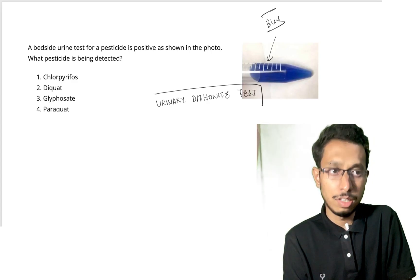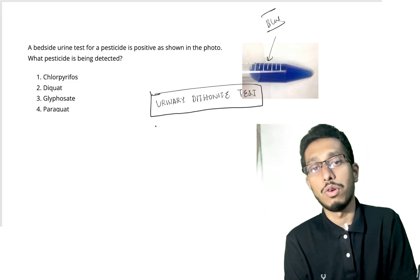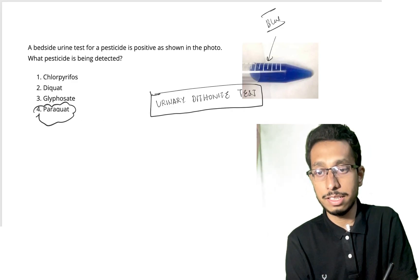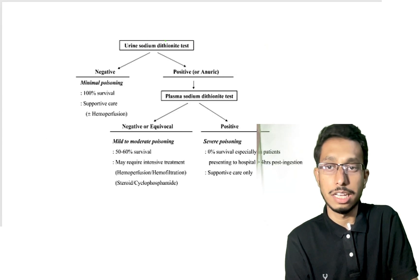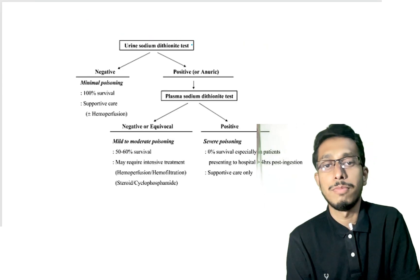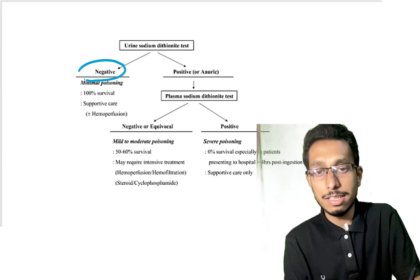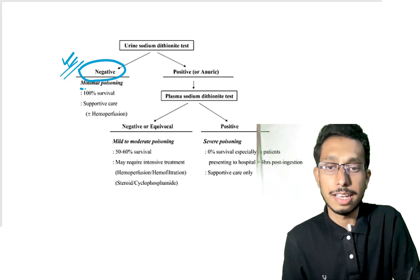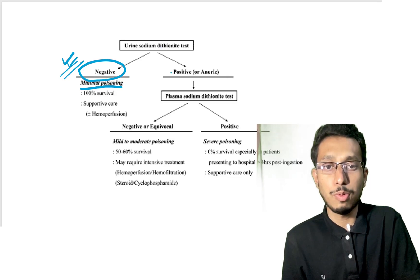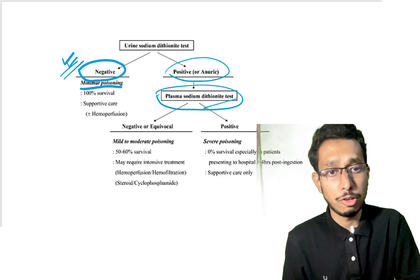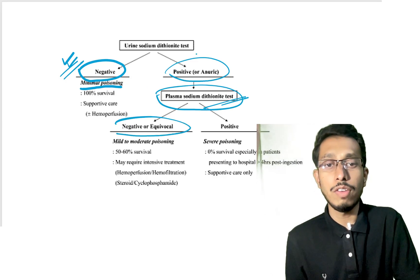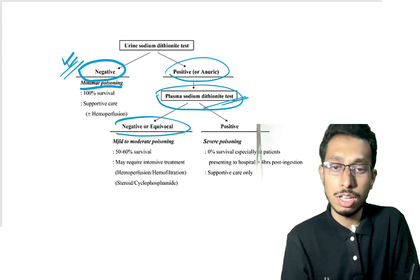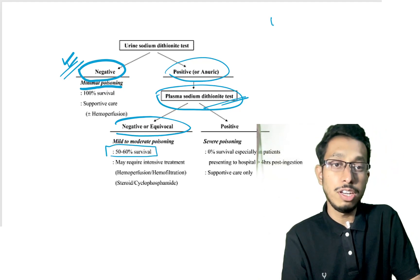It's a simple test to assess or identify the prognosis of paraquat poisoning. If urinary sodium dietonate test is negative, the patient has not ingested adequate paraquat, so it's minimal poisoning. If urine test is positive, we check plasma sodium diathenate levels. If plasma is negative, all the poison is already being excreted in urine, so there's good survival benefit. But if both urine and plasma are positive, it's very serious.